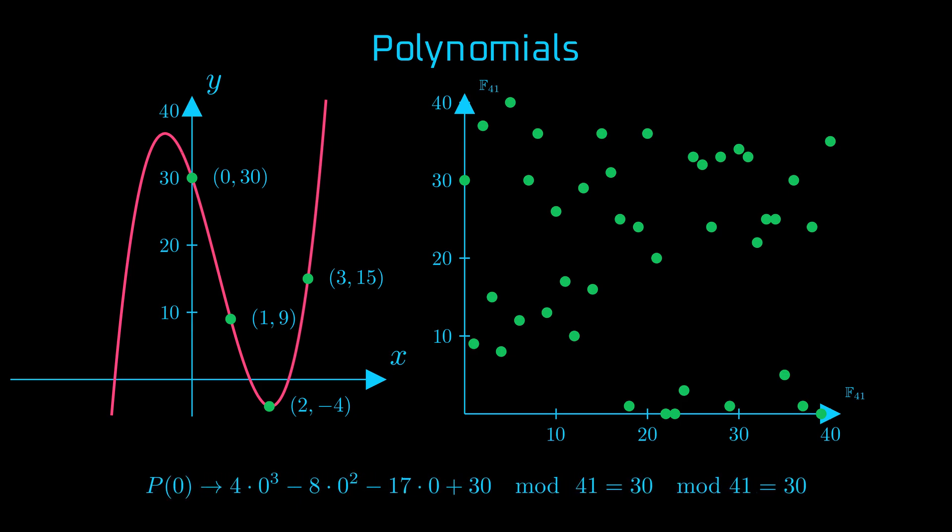For the input 0, the polynomial has the value 30, which modulo 41 is 30. p of 2 is negative 4, so in a finite field it'll be 37. The calculations are later conducted in the same manner.